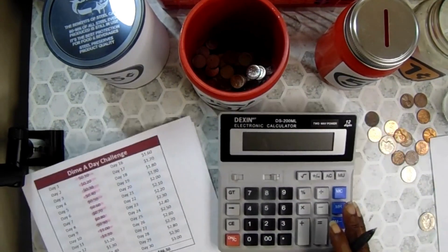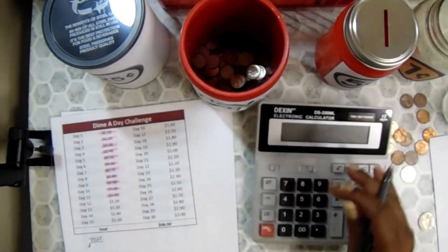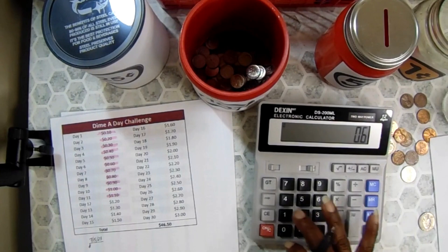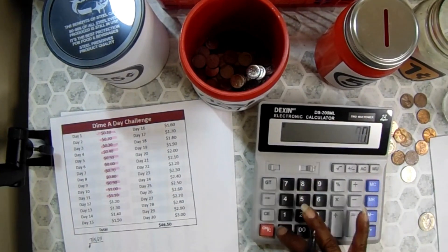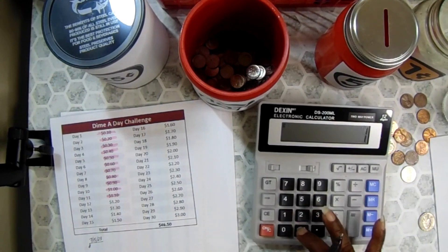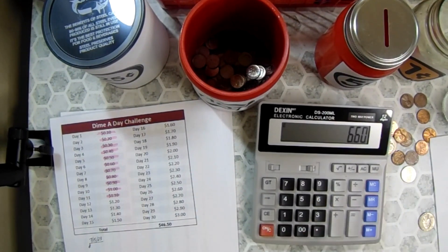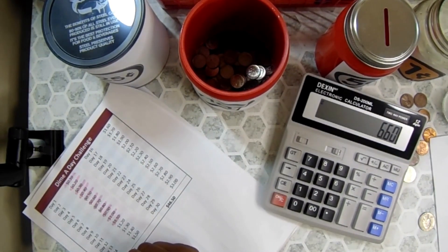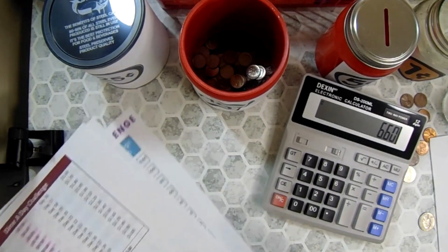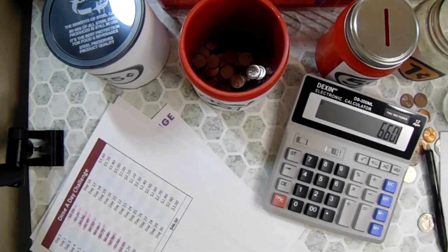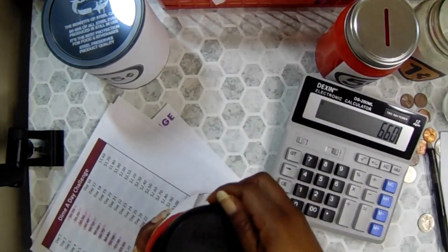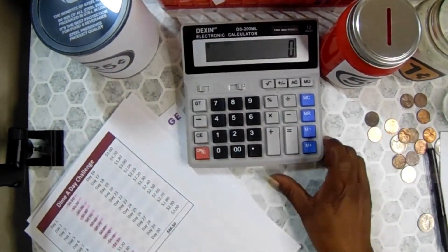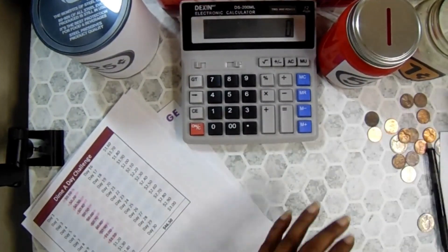And the total amount that I have is, so we got 10, 20, 30, 40, 50, 60, 70, 80, 90, $1.10. So I'm going to have $6.60 as of today, as far as the dimes go. Not bad. I'm going to clear that out and then I'll just move the things as we go along.